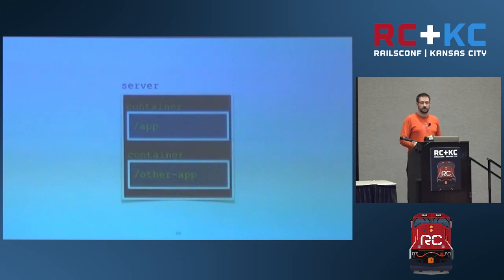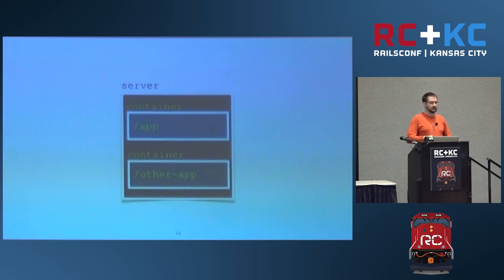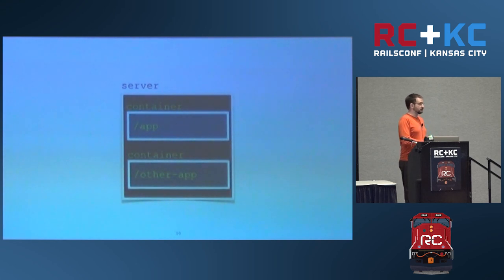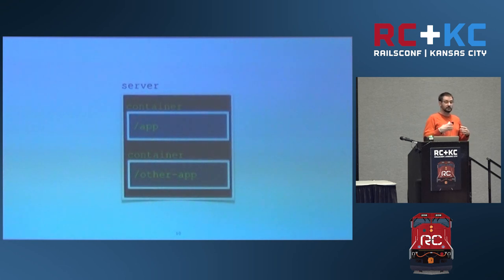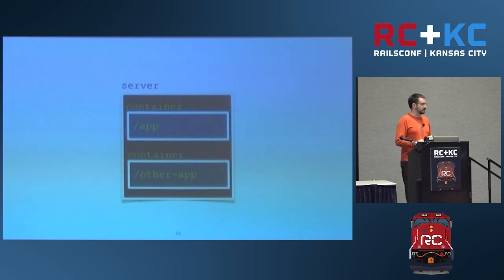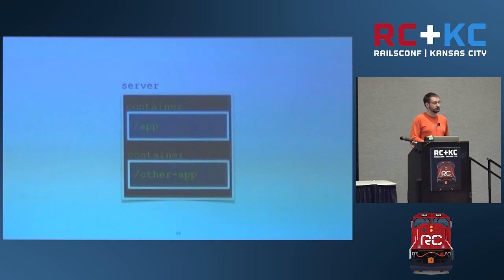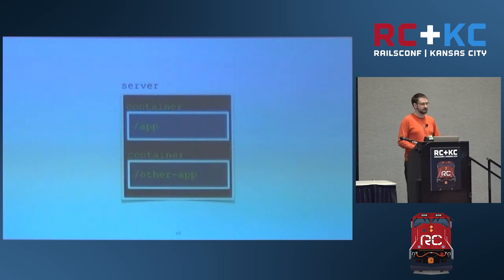Docker containers still use the same kernel — this is not a VM with a separate operating system. But Docker provides insulation so that each running container appears to itself as though it is the only thing in the universe. It only sees its own file system, and you can put constraints on how much CPU and memory it uses. This minimizes the possibility of applications interfering with one another despite running on the same host — a very attractive feature for shared hosts.